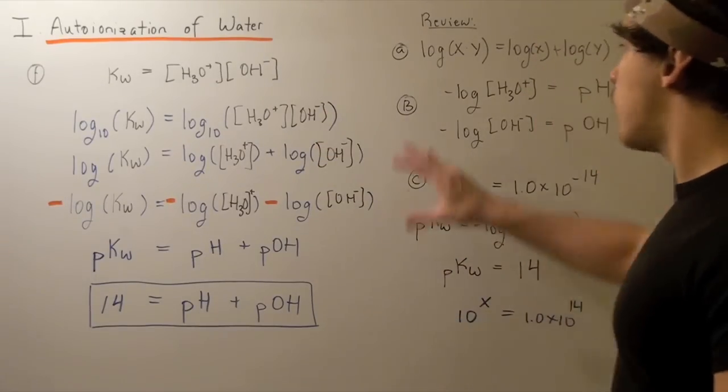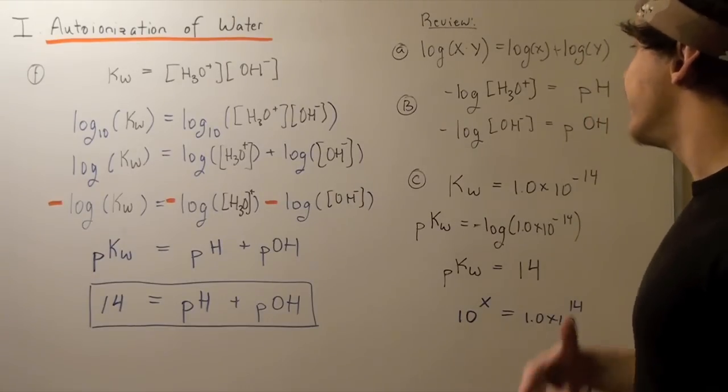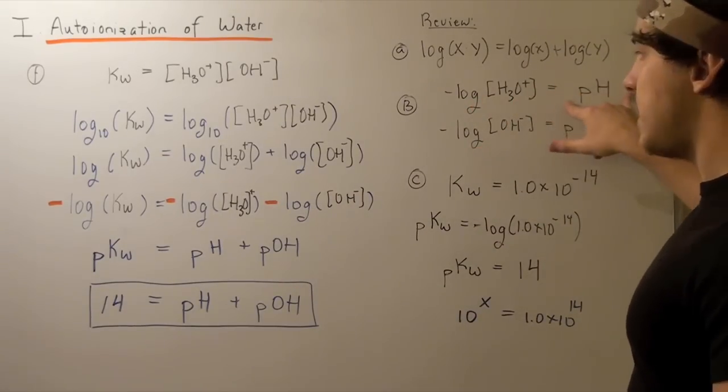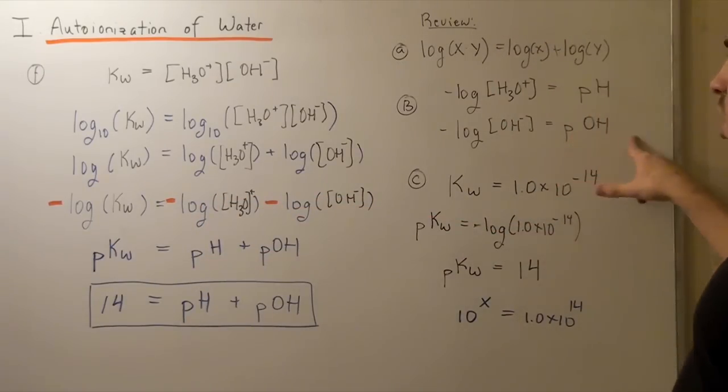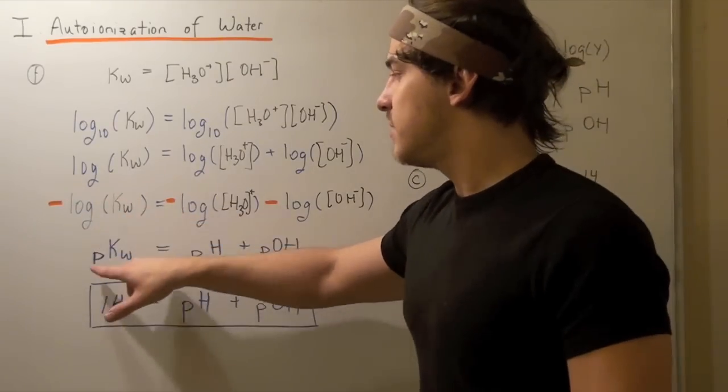To use part B, I need to multiply the entire statement by negative 1. And now I can substitute. I bring this guy, the pH, into here. And this guy is simply pOH, goes here. And this guy is simply pKw.